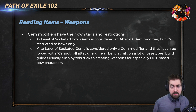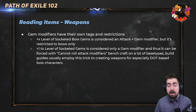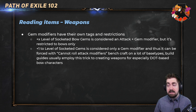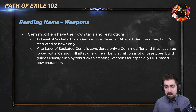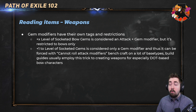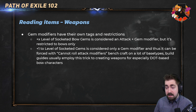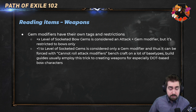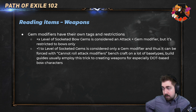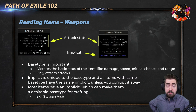Gem modifiers have their own tags and restrictions. It's always important to look at the top of the gem to see what tags they have — you can learn a lot about how to scale your build from that. For example, plus level of socketed bow gems is considered an attack and gem modifier, but it is restricted to bows only. Plus one level of socketed gems is only a gem modifier, and because of that, it can be force-rolled with the 'cannot roll attack modifier' bench craft. That means you can have an open prefix, do 'cannot roll attack mods,' and if you exalt you get guaranteed plus one level of socketed gems — that's how we easily make plus three bows, which is really good for damage over time bows, explosive arrow, or elemental hit.